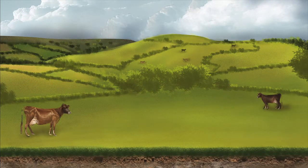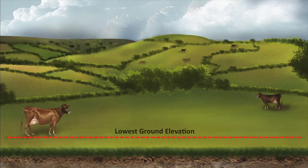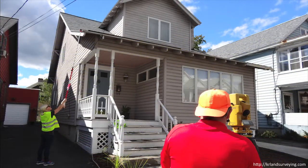An entire lot or parcel can be removed from the Special Flood Hazard Area by a Letter of Map Amendment if the lowest ground elevation within the boundaries of the property is at or above base flood elevation. The services of a licensed professional engineer or surveyor are required to collect the elevation information needed to request a LOMA.